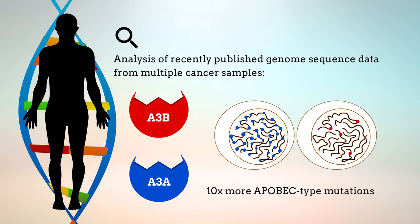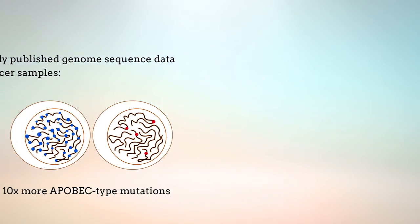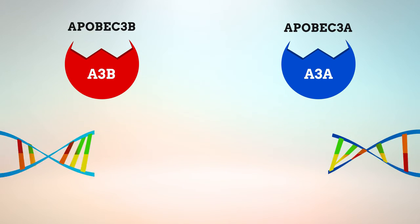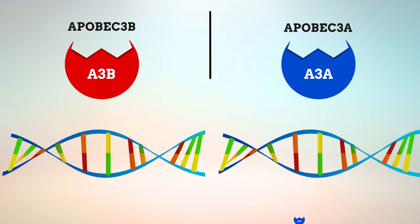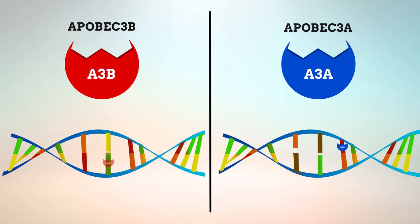This difference in mutagenic potency is consistent with the difference in how A3A and A3B interact with DNA, as A3A is more likely to induce breaks in the DNA strand.